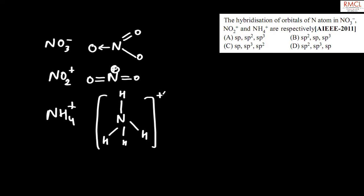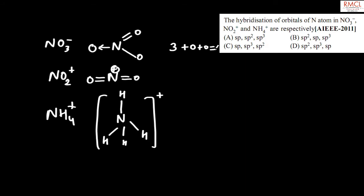For the first species NO3-, there are three sigma bonds, zero lone pairs, and zero unpaired electrons. So the total is three, giving sp2 hybridization.